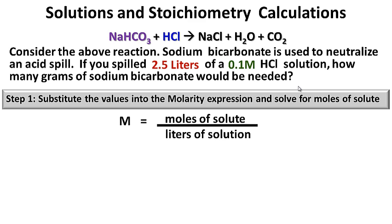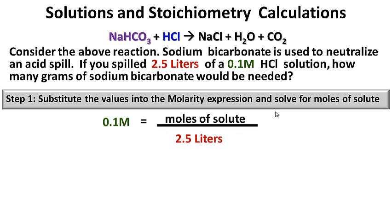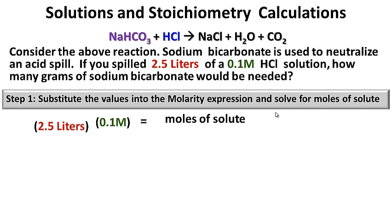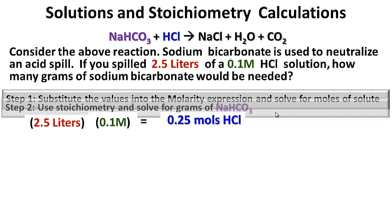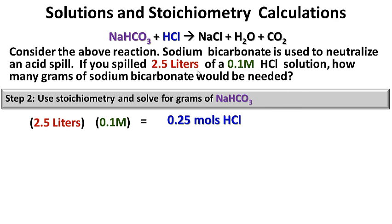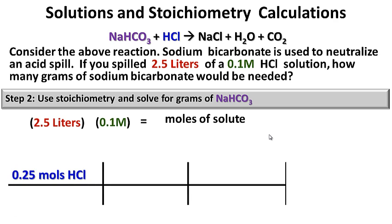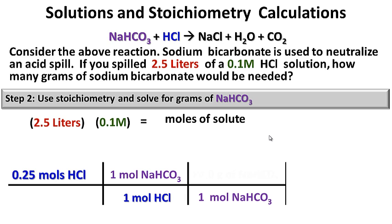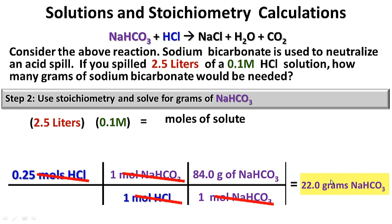Step one: substitute the values into the molarity expression and solve for moles of solute. Putting in 2.5 liters and 0.1 molarity and solving, we get 0.25 moles of HCl. Step two: use stoichiometry and solve for grams of sodium bicarbonate. We have 0.25 moles of HCl. According to the balanced chemical reaction, one mole of HCl requires one mole of sodium bicarbonate. One mole of sodium bicarbonate has a molar mass of 84 grams. Units cancel, and we get 21 grams of sodium bicarbonate needed to completely neutralize the spill.